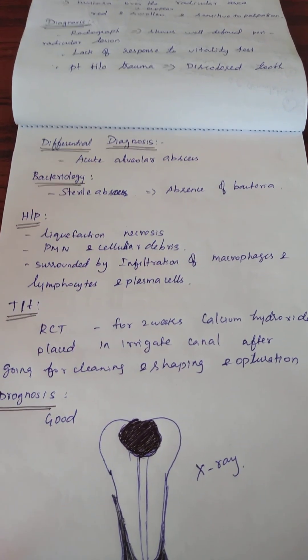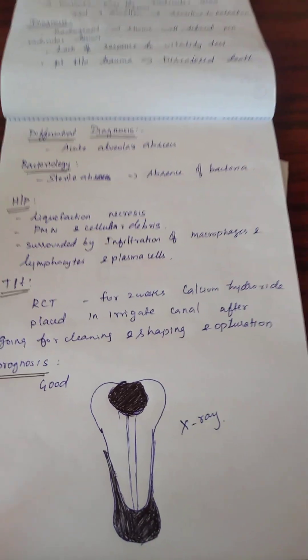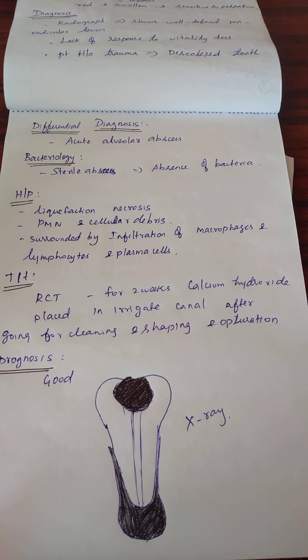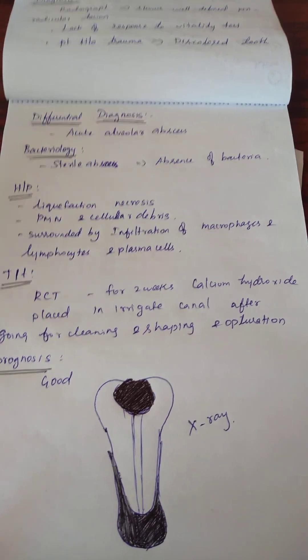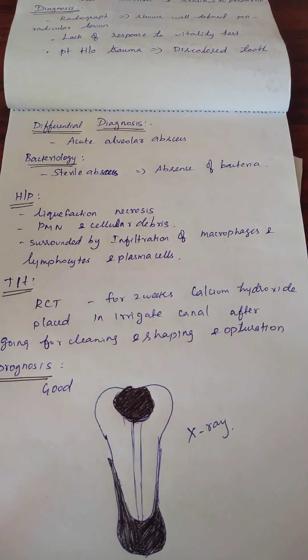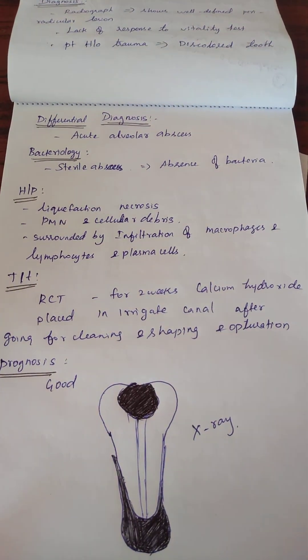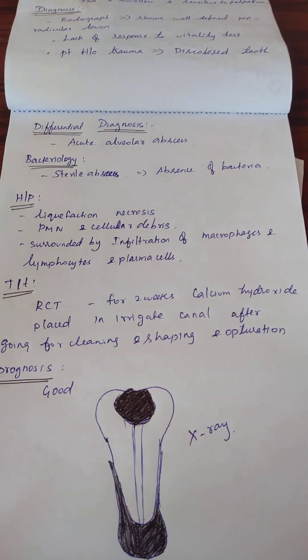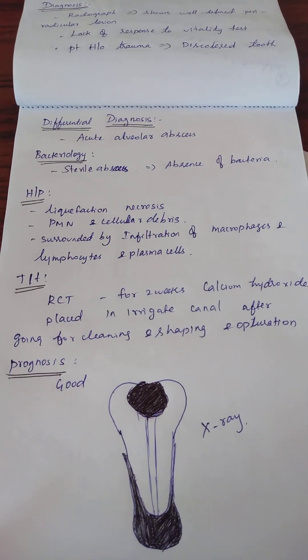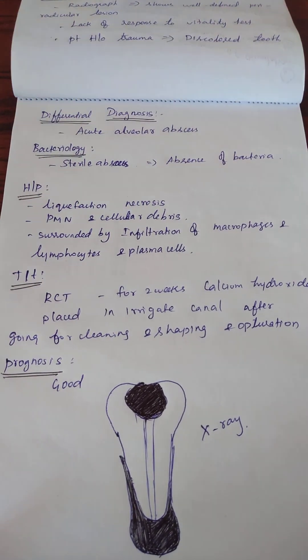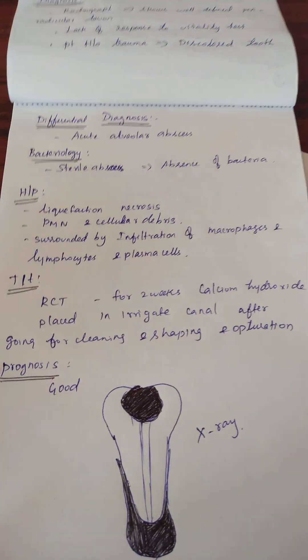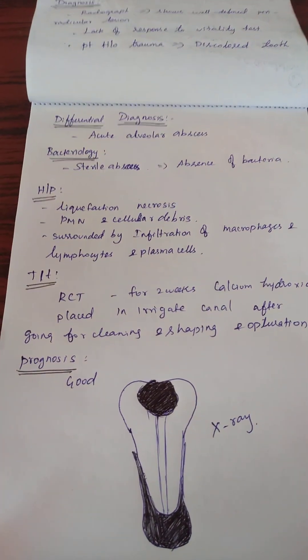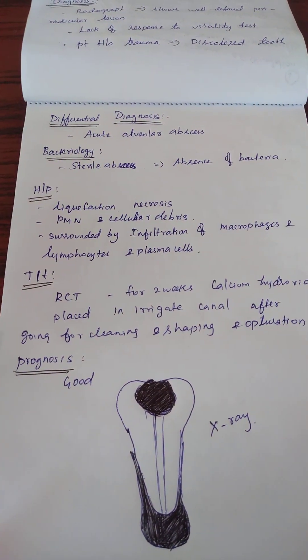For treatment, root canal treatment is performed. For 2 weeks, calcium hydroxide is placed in the irrigated canal, followed by cleaning, shaping, and observation. Prognosis is good.